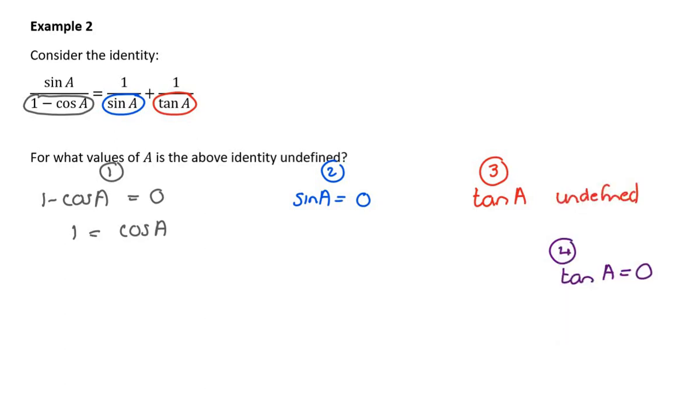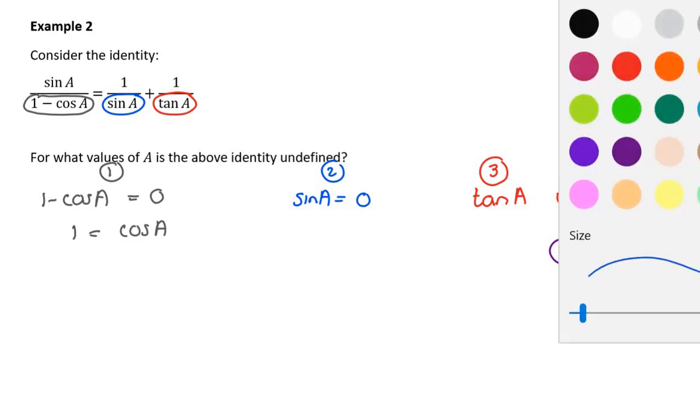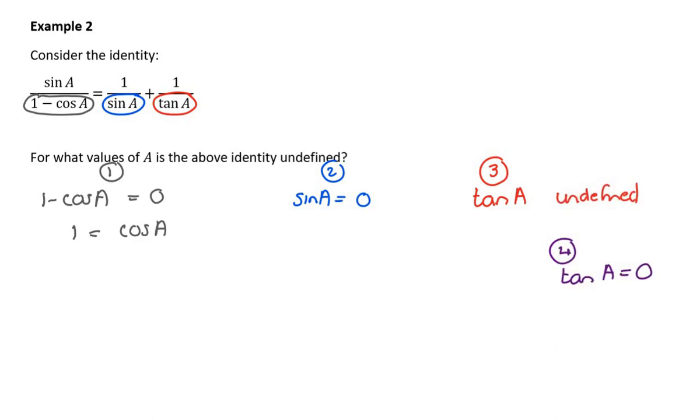So basically, when tan is 0, I also have a problem. So there's four things to consider here. You might end up generating some of the same answers. So let's just use the first one. When is cos A equal to 1? I'm pretty sure that it's when A is 0 degrees, plus k360. And it's plus or minus 0. So I don't have to write the second solution.